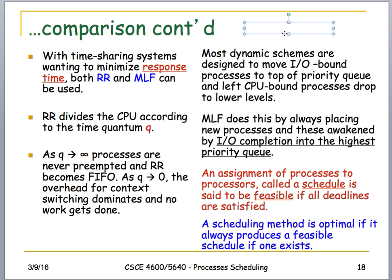A schedule is called feasible if it satisfies all deadlines, whether in a real-time system or not. It is optimal if it always produces a feasible schedule whenever one exists. These are important theoretical properties to understand when evaluating scheduling algorithms.